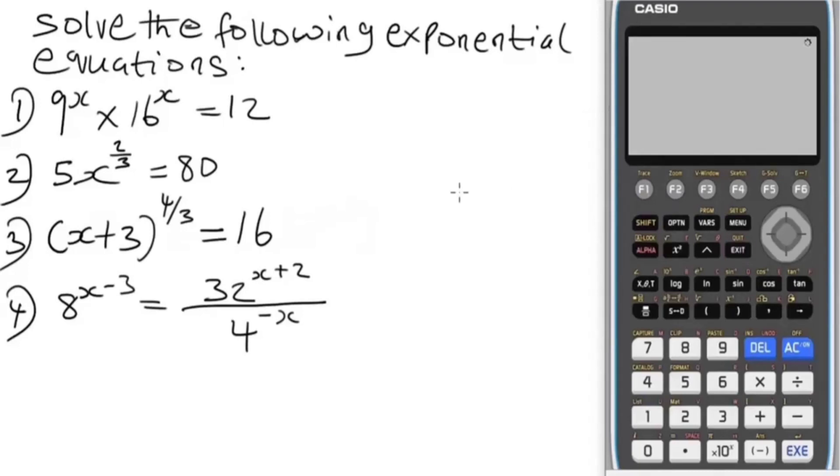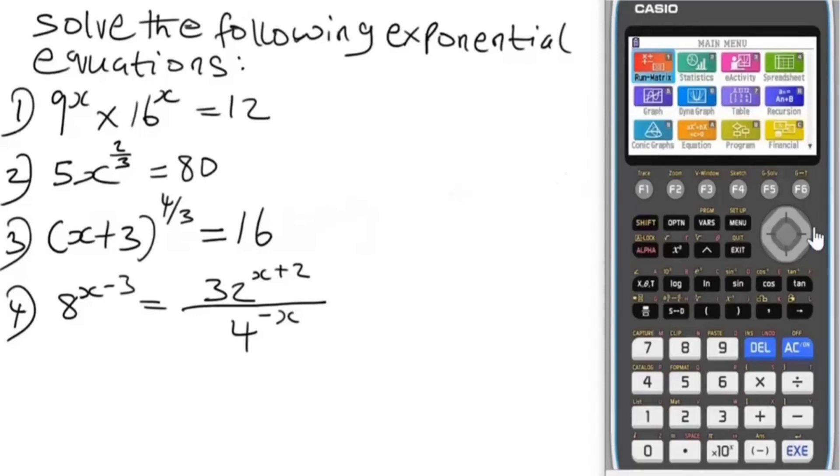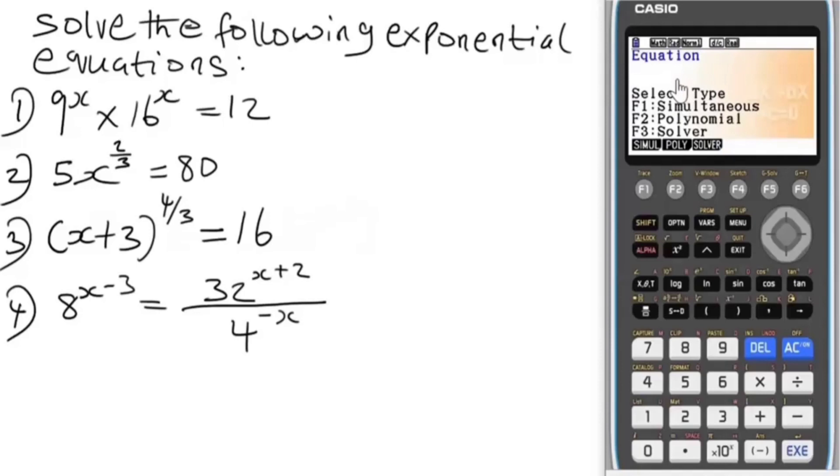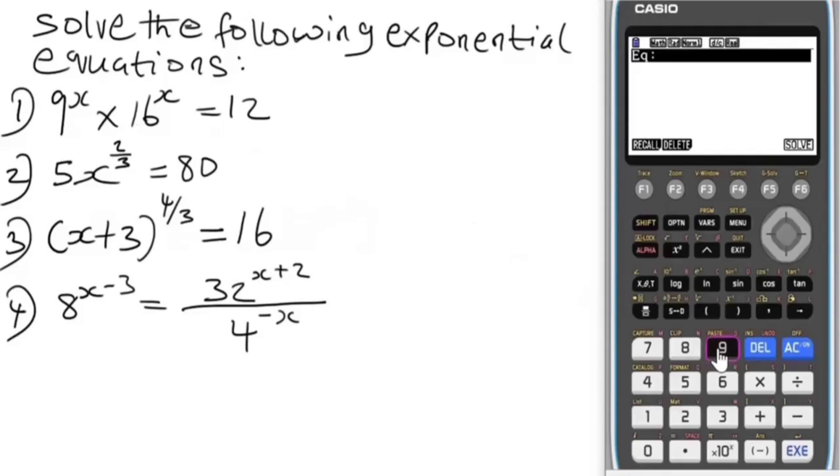Next we're going to put our calculator in equation mode. Navigate to Equation. We're going to make use of the equation solver, F3. We have this function: a^x times b^x equals f. Let's input the functions exactly as we have them.